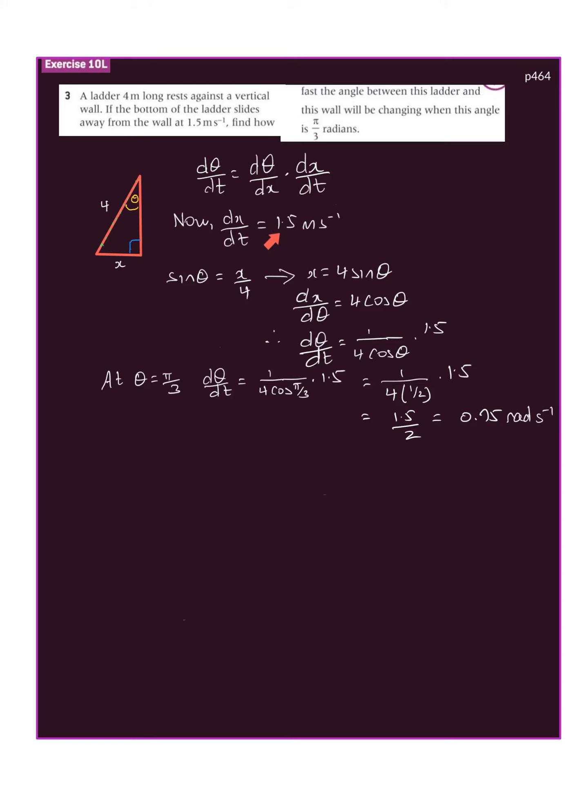dx/dt was given as 1.5. So our expression for dθ/dt is dθ/dx, which is 1/(4 cos θ), times dx/dt, which was given.